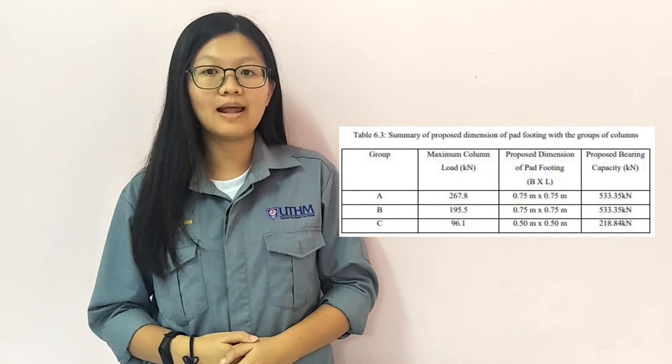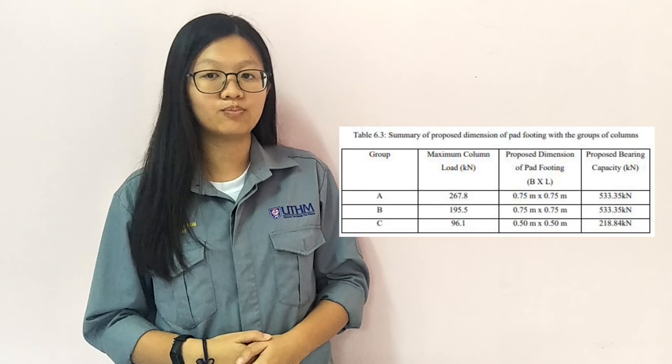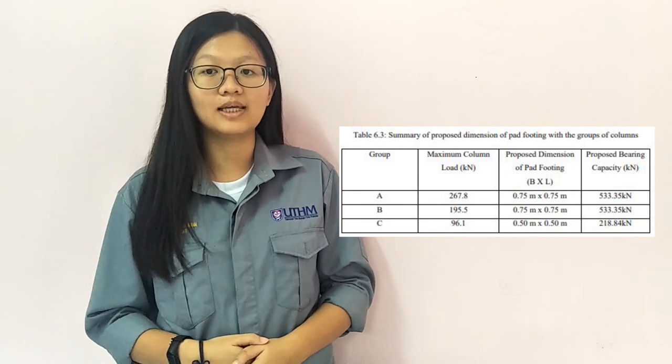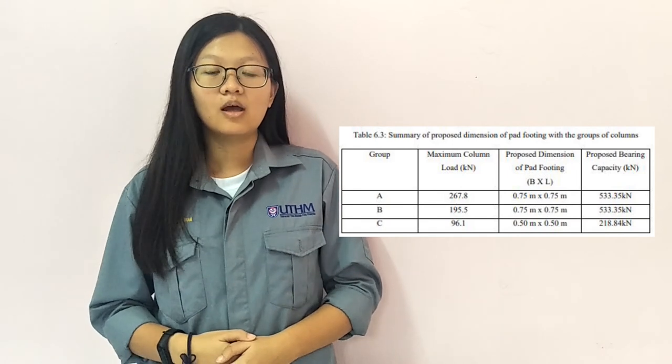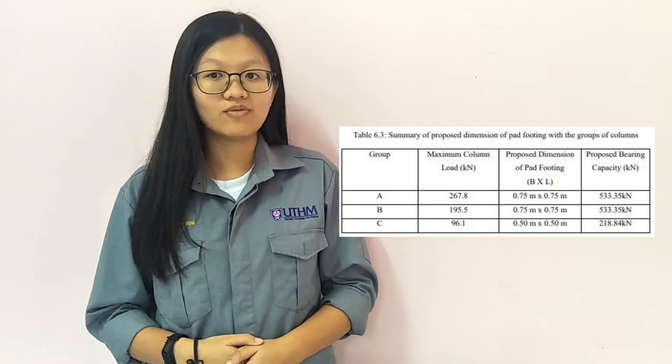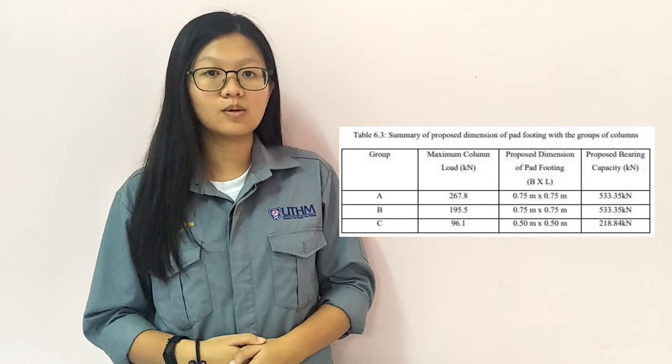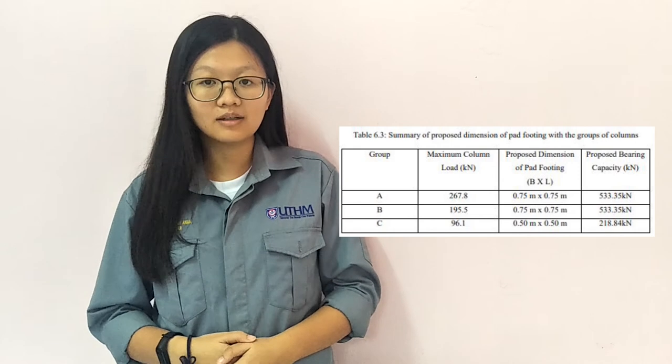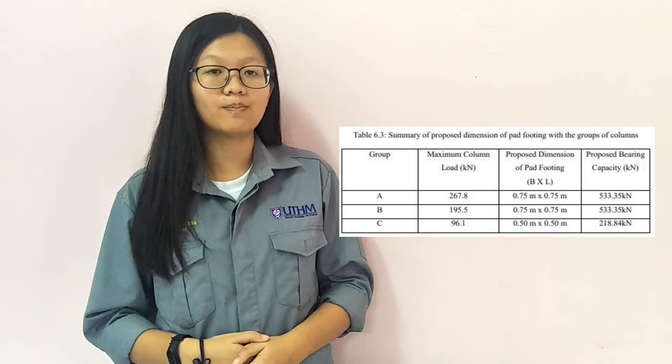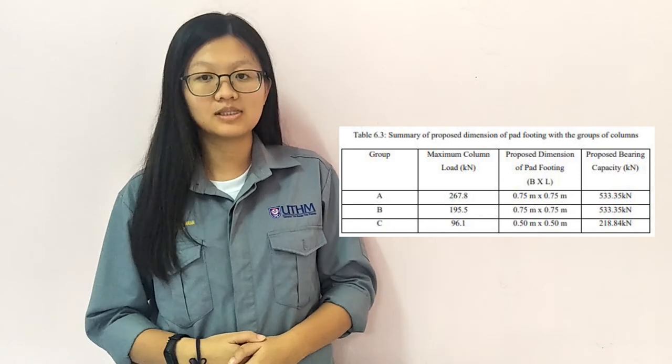At the end, we plan for groups A and B to use pad footings of 0.75m, while 0.5m is used for group C columns.